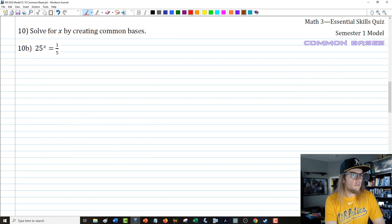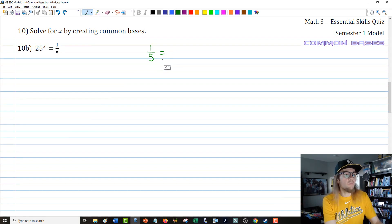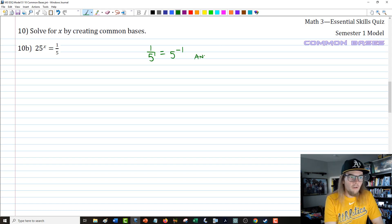Our second problem we have 25 to the x equals 1 fifth. We have 25 and 1 fifth to think about. 1 fifth is definitely going to be a power of 5. Specifically, because of the reciprocal nature, we need a negative exponent. Since 1 fifth is the same thing as 1 over 5 to the first power, this is 5 to the negative 1. Likewise, 25 is equal to 5 to the second. So we have common bases.